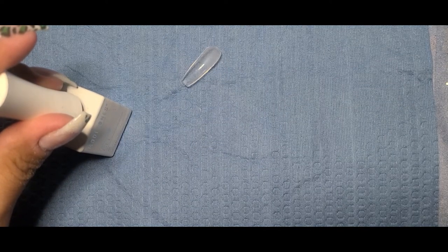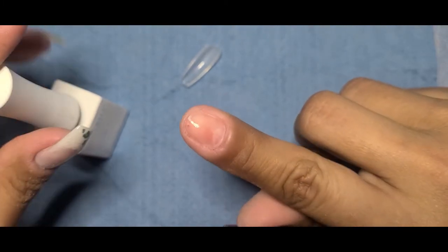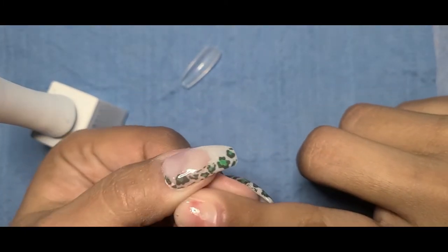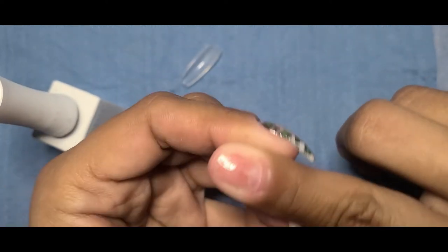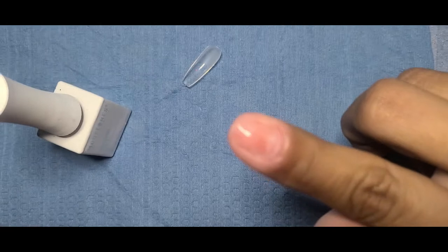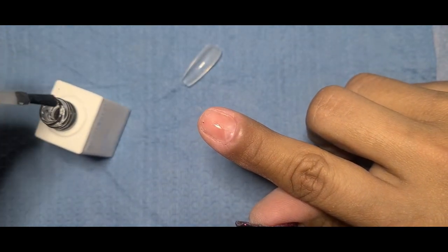Now after I do that, I am going to go in with my Model 1's gel base coat. Builder gel does need a sticky, tacky base coat to adhere to. So just like it needs the rough surface on the inside of the tip to stick to the tip, it also needs a tacky surface from the gel base to stick to your finger.